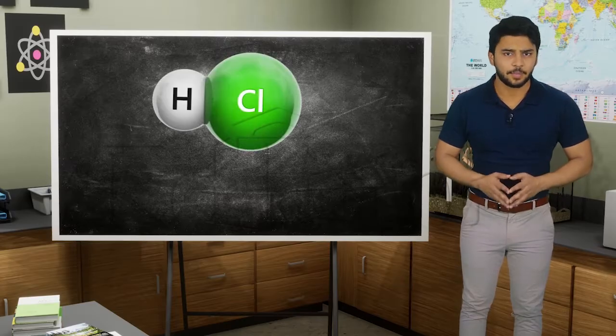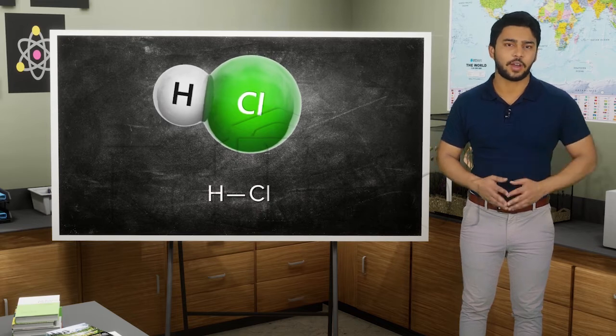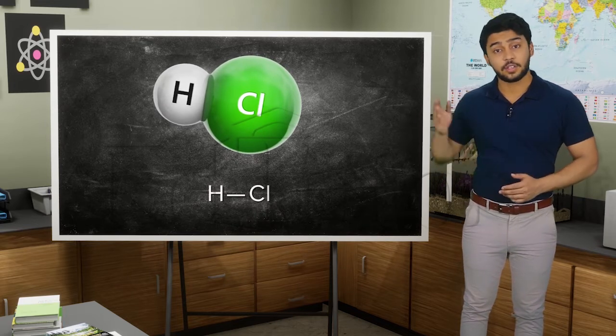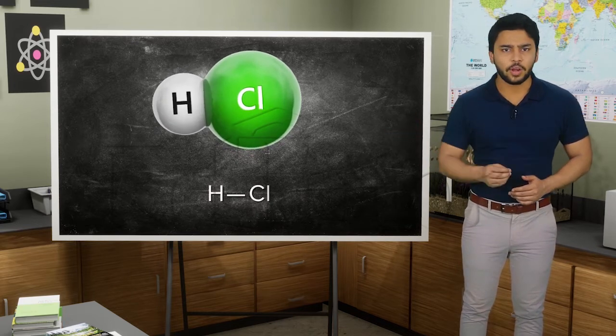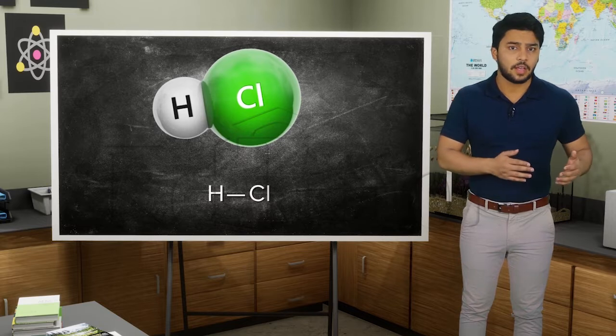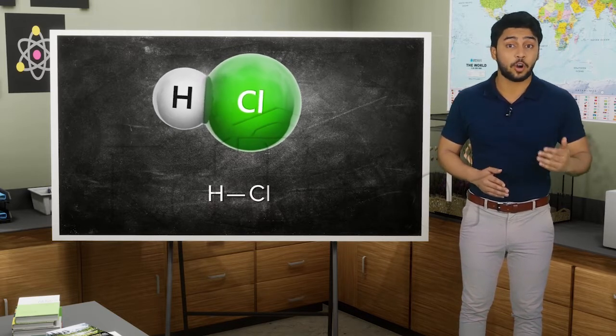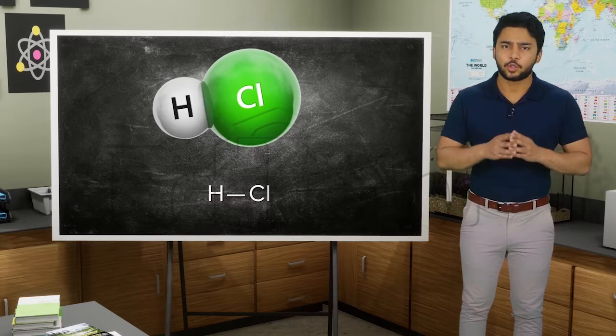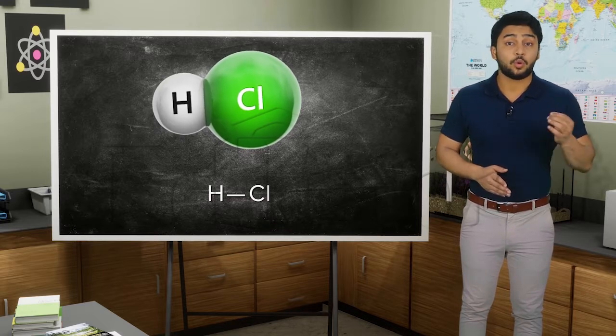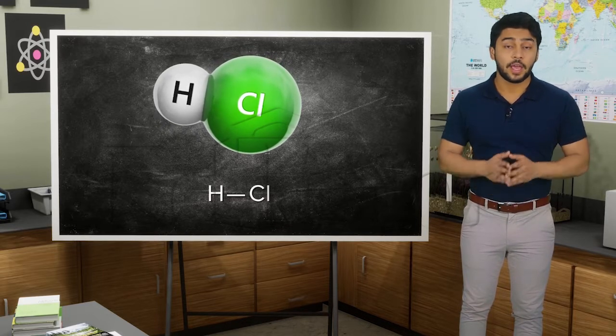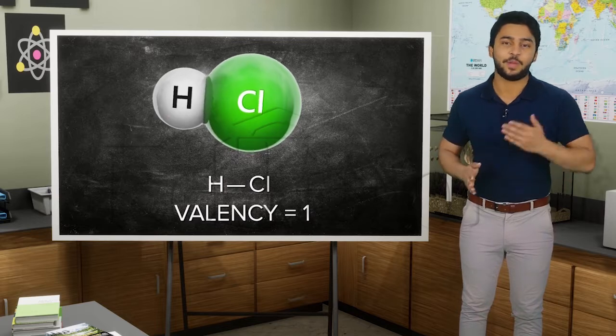Our first example is of hydrogen chloride. As you can see on this side there is one hydrogen, a dash, and then a chlorine next to it. This dash represents the bond between the two. So you can say chlorine forms one bond, hence its valency will be one.